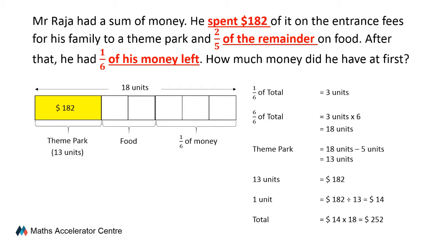Let's recall what we did. First, we highlighted the keywords. Then we transformed them into useful information — the bar model. From there, we used the model to work out all the important information which helped us arrive at the answer. Let's proceed now to the next question.